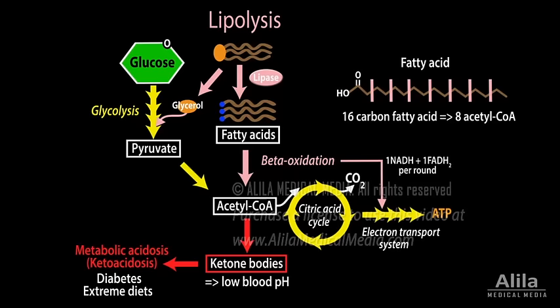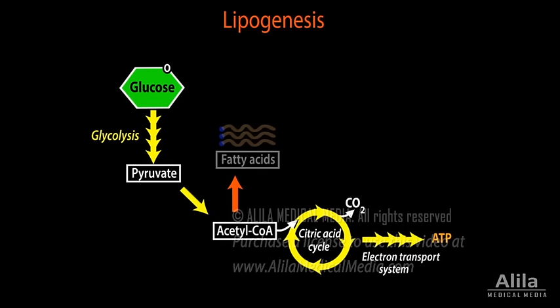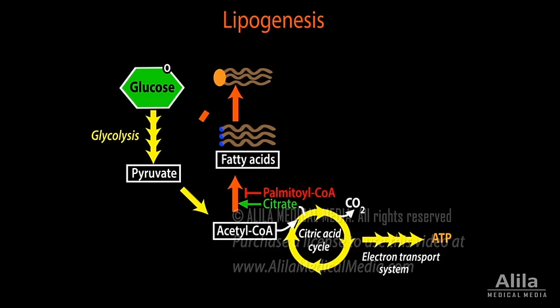On the other hand, diets that are high in carbohydrates generate excess acetyl-CoA that can be converted into fatty acids. Synthesis of fatty acids from acetyl-CoA is stimulated by citrate, a marker of energy abundance, and inhibited by excess of fatty acids. Fatty acids can be converted into triglycerides for storage or synthesis of other lipids by combining with glycerol derived from a glycolysis intermediate.